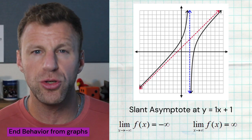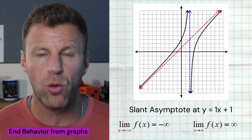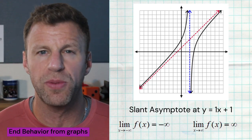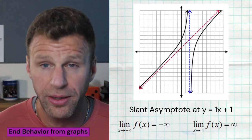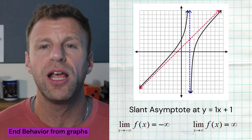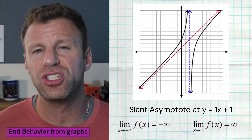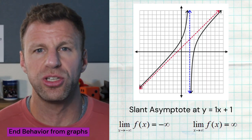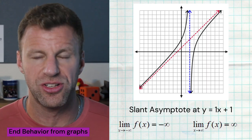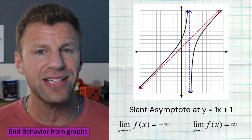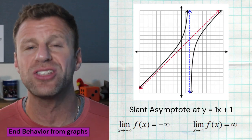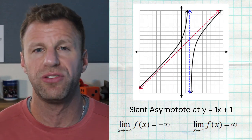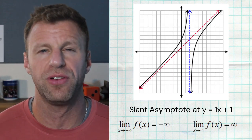We notice that the equation of the slant asymptote is y equals x plus 1. But right now I just care that you understand end behavior — looking at those ends. So even though there's a slant asymptote, the ends are still going towards positive infinity or negative infinity.